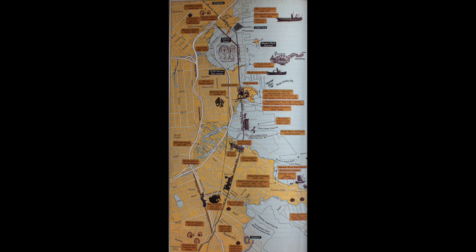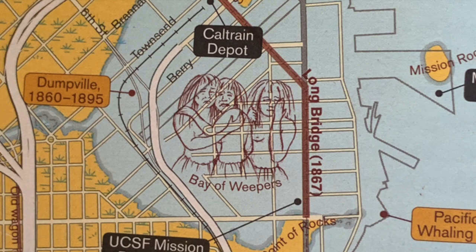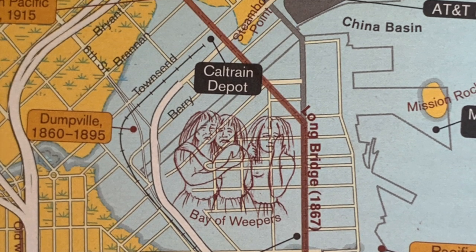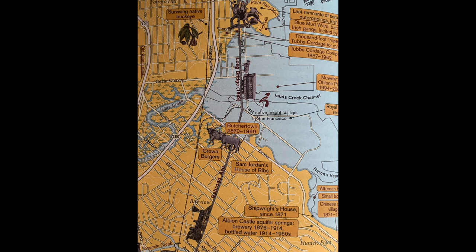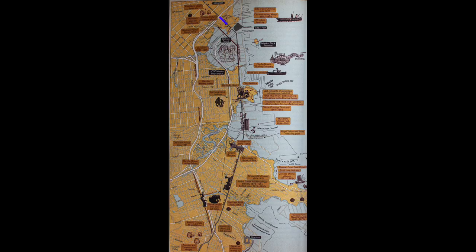3rd Street continues down the central waterfront into the Bayview district. But once upon a time, it was three different streets connected by long bridges over long-gone bodies of water. The current Mission Bay neighborhood was once actually Mission Bay, with Mission Rock a tiny outcropping on its eastern edge. The Dogpatch and Irish Hill were part of the historical eastern shore of the city, but the waterways and bridges around them have long been filled in, with Kentucky Street on the central waterfront and Railroad Avenue in the Bayview subsumed into the extended 3rd Street.